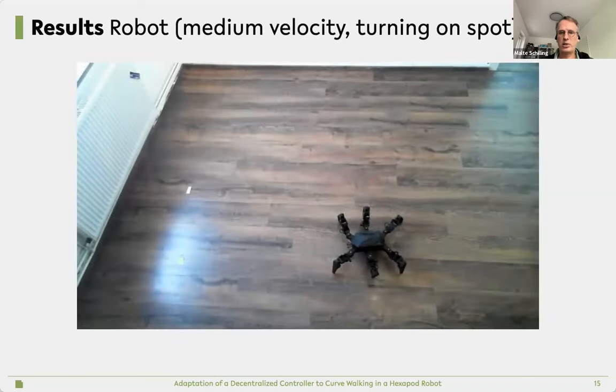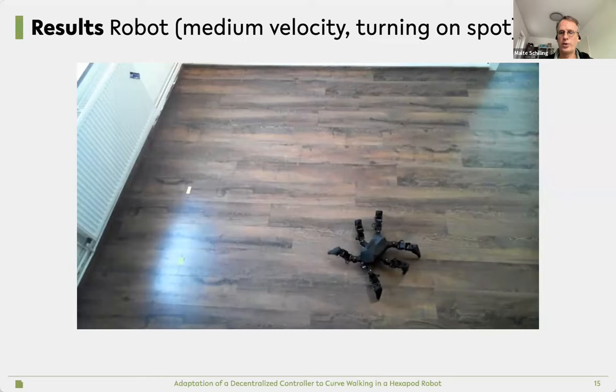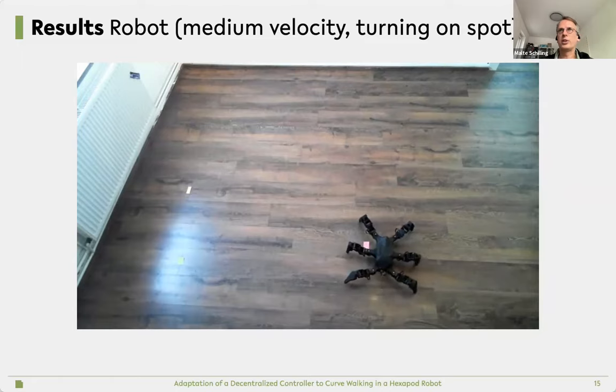Lastly, we have turning on the spot. Again, this is medium to high velocity. In this case, you basically see that the front of the robot is turning to the left and the hind is turning to the right. This leads to this more or less turning on the spot.